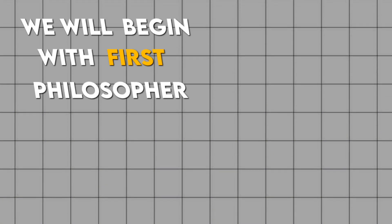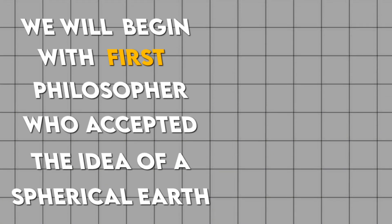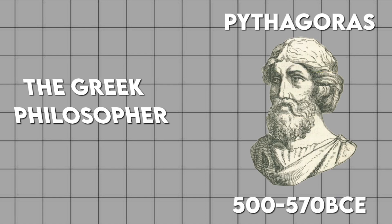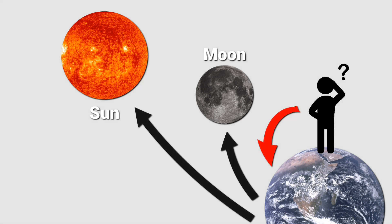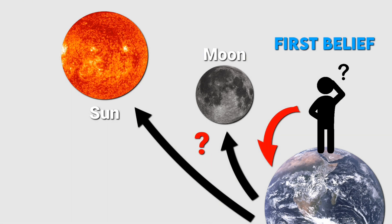We will begin with the first philosopher who accepted the idea of a spherical Earth, the Greek philosopher Pythagoras, around 570 BCE. He observed that the moon appears as a sphere at night, and the sun also takes the shape of a sphere. So why wouldn't the Earth also be a sphere? This was the first belief in the Earth's sphericity in a world that largely believed in its flatness.